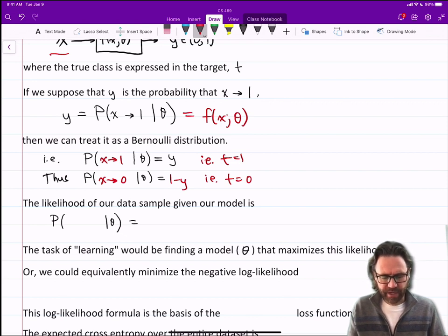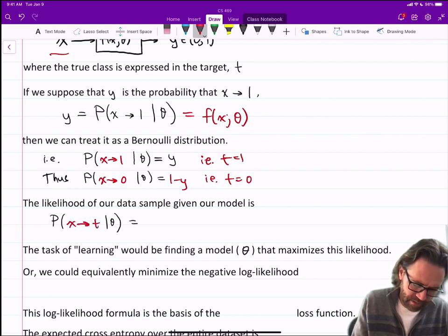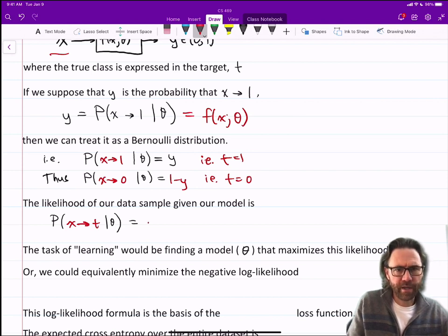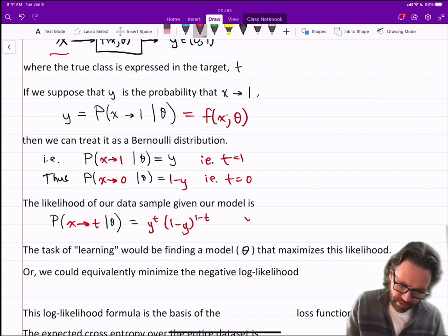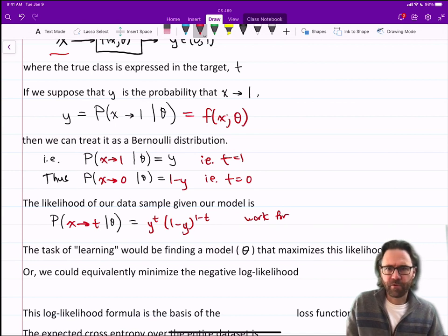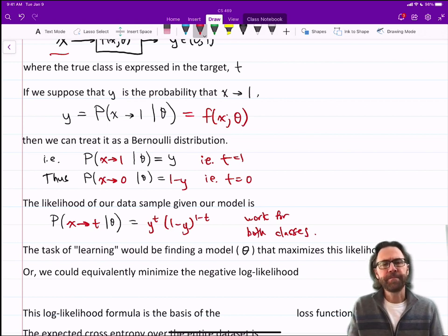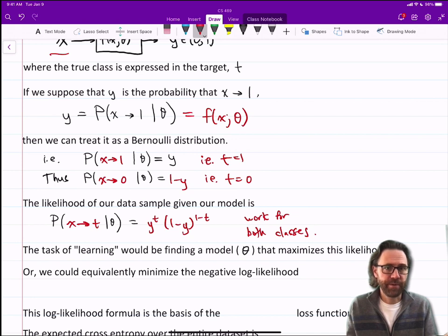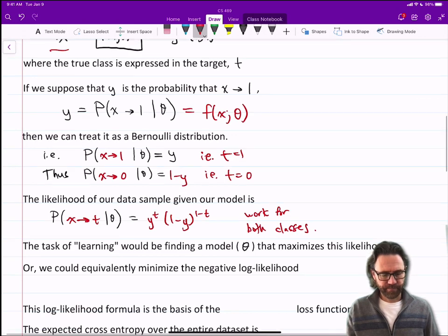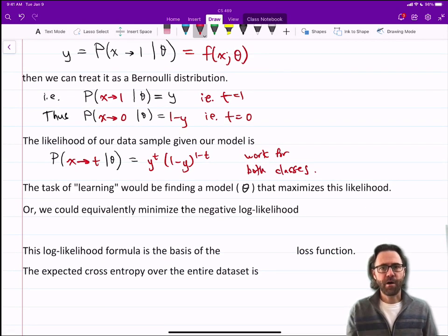The likelihood of our data sample given our model is: probability x is of class t equals y to the t times 1 minus y to the 1 minus t. This works for both classes. If t equals 0, the first part is y to the 0 and disappears, leaving 1 minus y to the 1. If t equals 1, the second part disappears. The task of learning is finding the model or set of parameters theta that maximizes this likelihood.